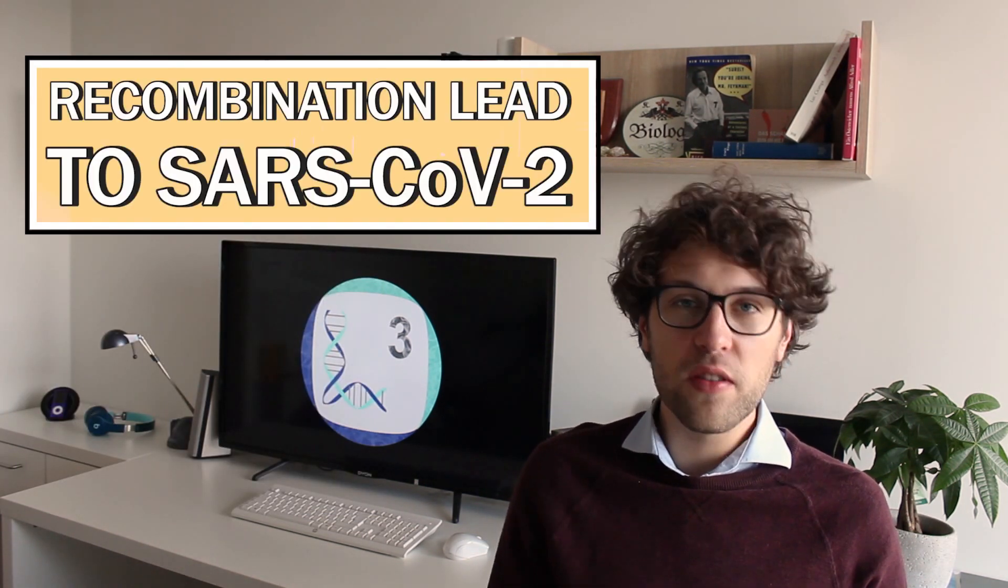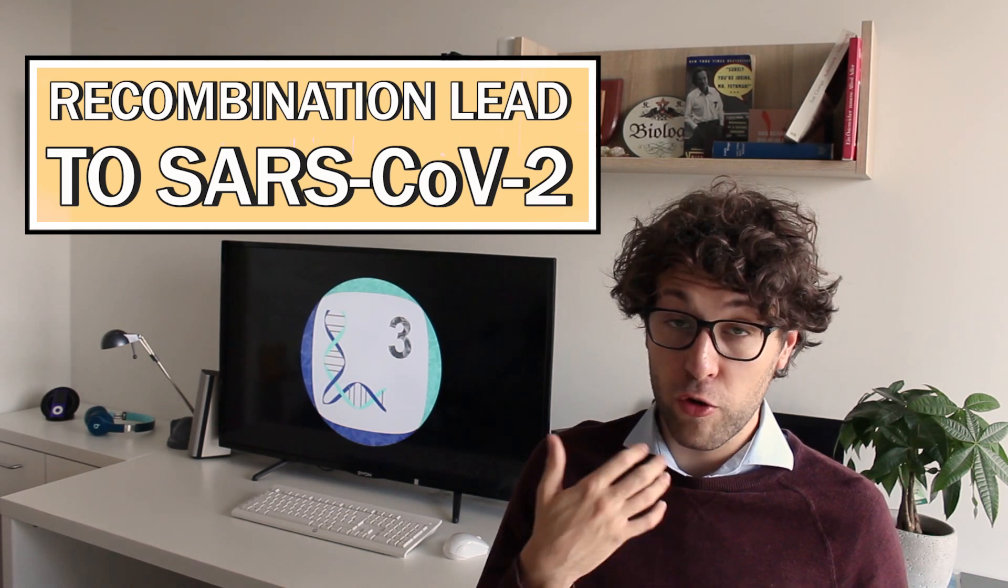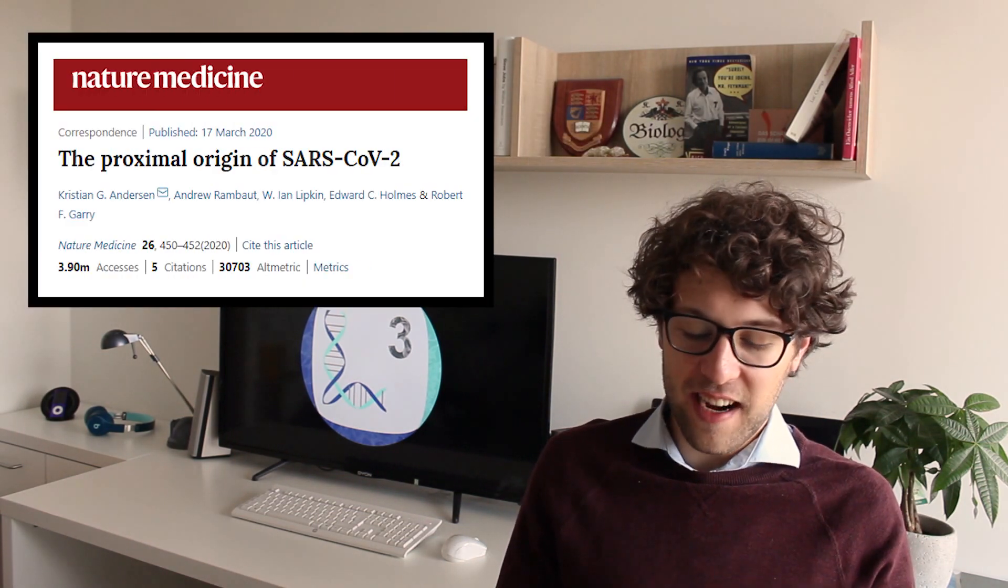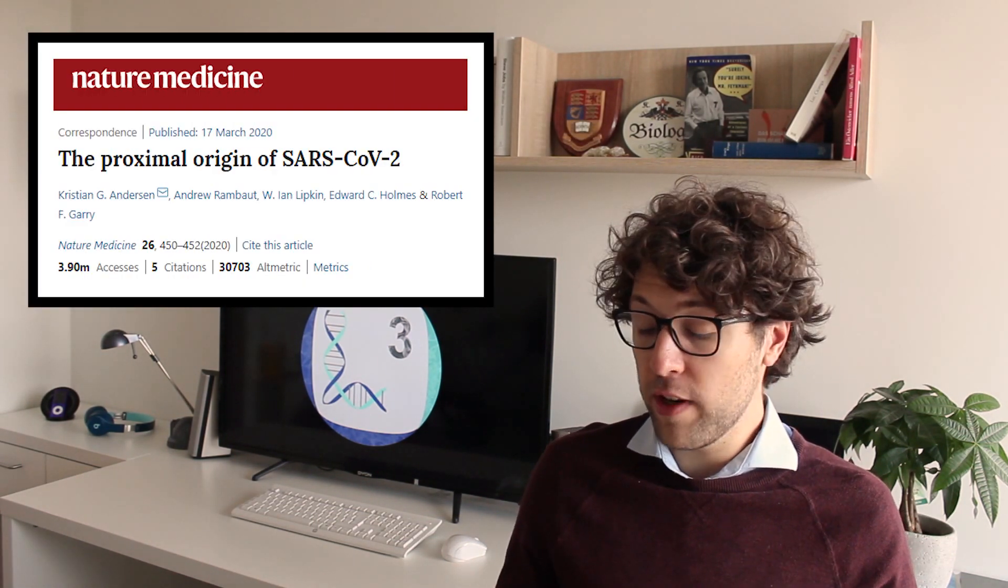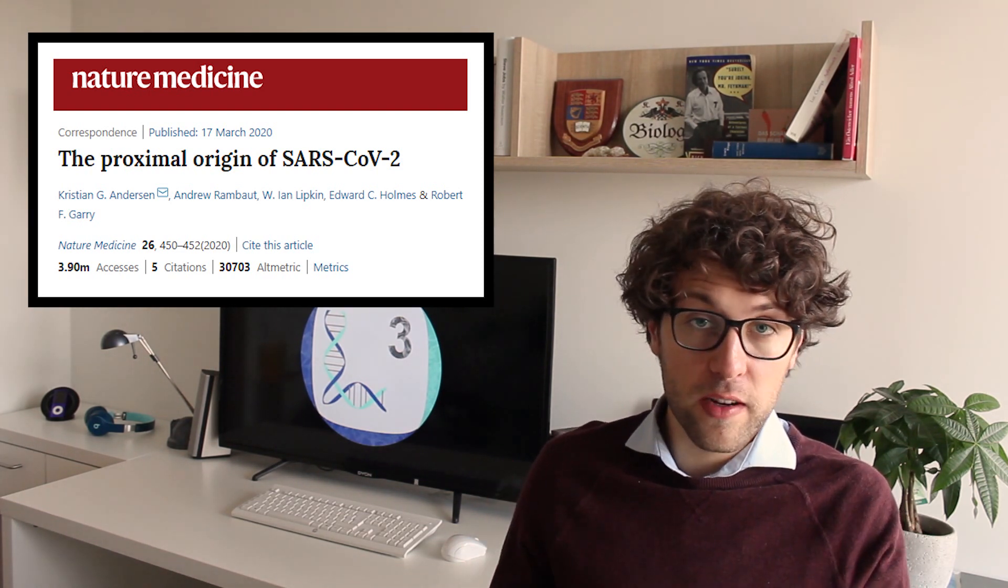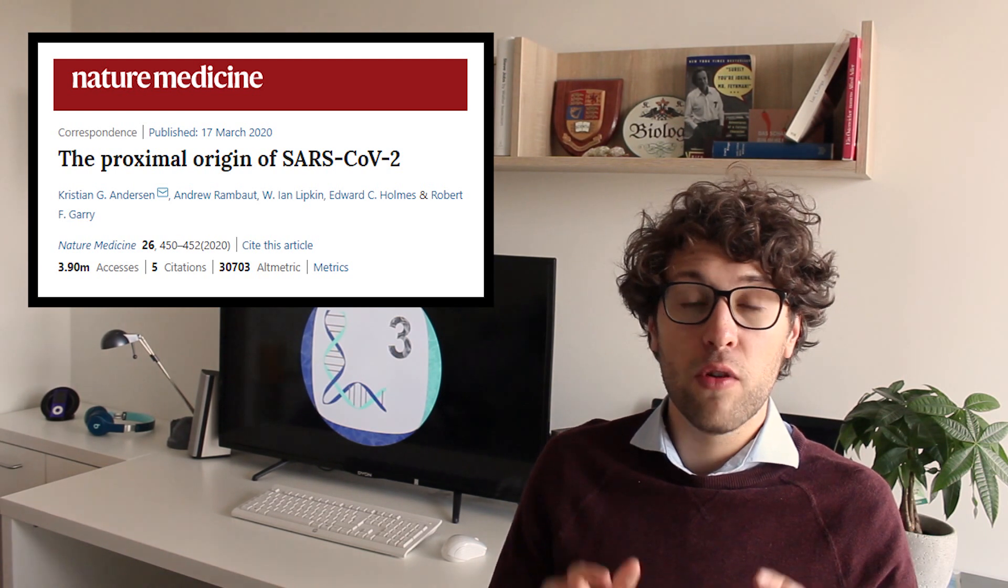Current evidence suggests that also SARS-CoV-2 originated from recombination but this time from a bat and a pangolin coronavirus. We know that since the RNA of SARS-CoV-2 is nearly identical to most genomic regions of a bat coronavirus while the spike protein encoding region is very similar to a pangolin coronavirus. So that is one explanation how SARS-CoV-2 originated.